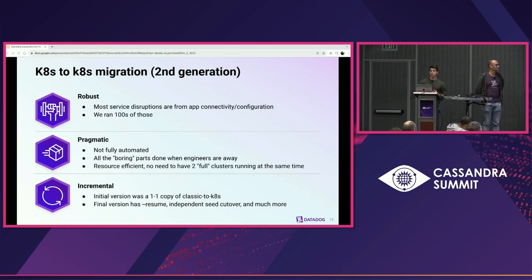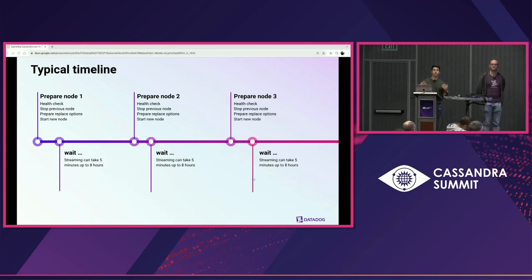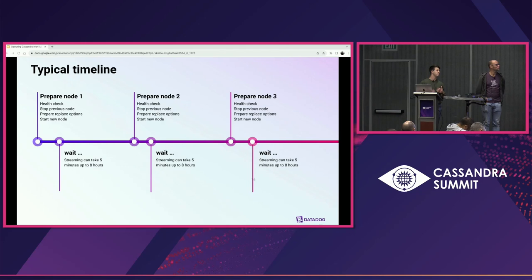The core logic was converted from an initial migration we'd used previously. If we look at what the typical manual timeline looks like — we wanted a series of node replacements where the old node was in the source Kubernetes cluster and the new node was in the destination. The timeline would look like: prepare node one, perform a cluster-wide health check, stop the previous node, prepare the new node, start it up, let the replica stream in all the data, wait a long time, then start the next node, and the next, until all nodes had been converted. Temporal could start the next replacement as soon as streaming finished.